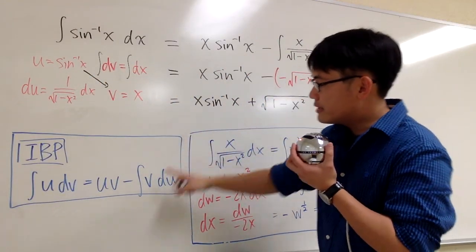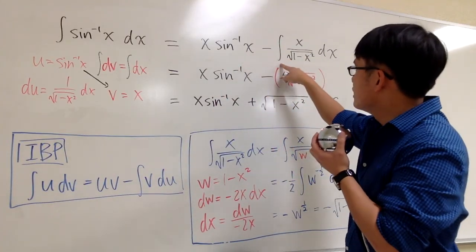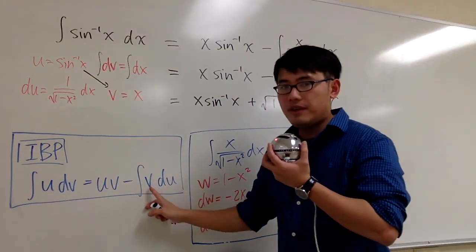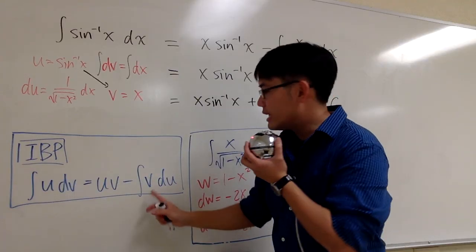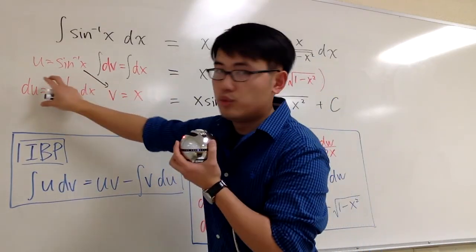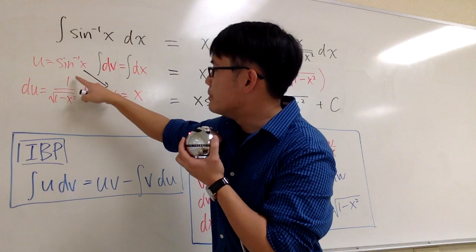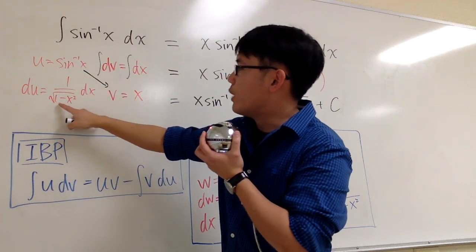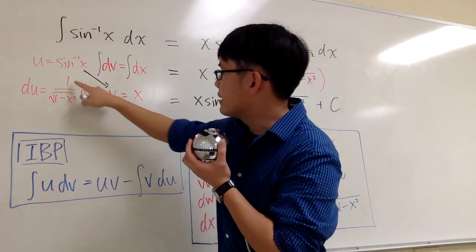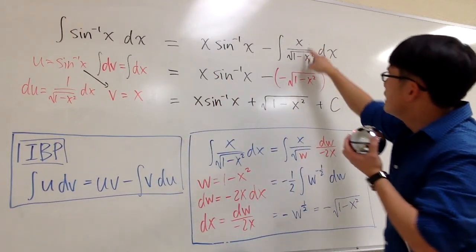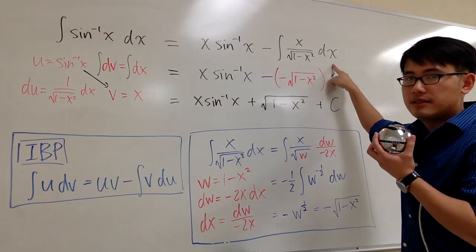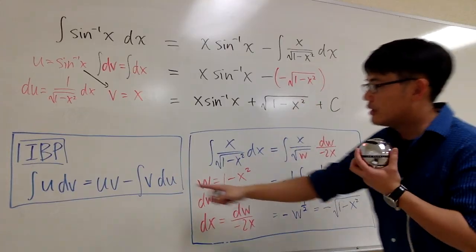And then the formula says we are going to subtract the integral. So let me put down subtract the integral of v du. And notice that v du is just this row. It's just x times 1 over square root of 1 minus x squared dx. So I can put the x on the top and over that on the denominator dx. So this right here is v du.